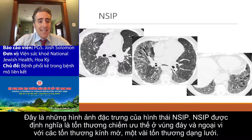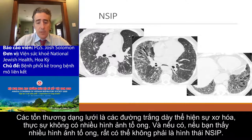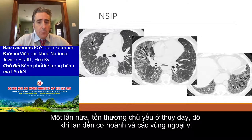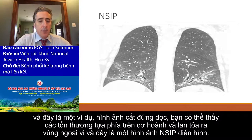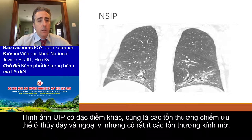These are representative images of NSIP. NSIP is defined as basilar and peripheral predominant with ground glass abnormalities and some reticulation — those dense white lines that represent fibrosis — and really not a lot of honeycombing, if any. If you see a lot of honeycombing, this is most likely not NSIP. It is basilar and peripheral predominant, and sometimes you'll see sparing of the diaphragm and sparing of the periphery. These coronal images show that this NSIP sits above the diaphragm but sparing that absolute periphery. This is a very typical look for NSIP.